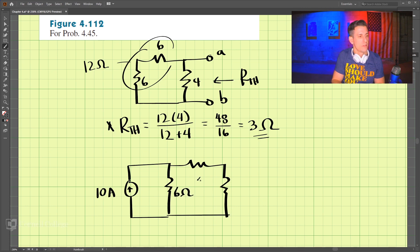This is 6 ohms, this is 6 ohms, and this is 4 ohms. And we're looking for the voltage here, the Thevenin voltage between these two terminals.